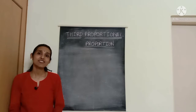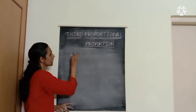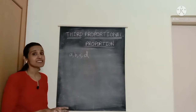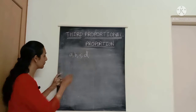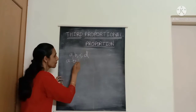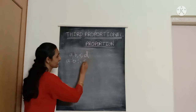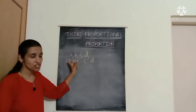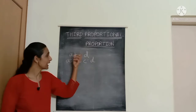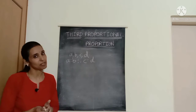Before that, let's do a quick recap of what proportion is. Any four non-zero quantities A, B, C and D are said to be in proportion if the ratio of the first two terms A and B is the same as the ratio of the third and fourth terms C and D. So if the ratio of the first two terms is equal to the ratio of the next two terms, all four quantities are said to be in proportion.